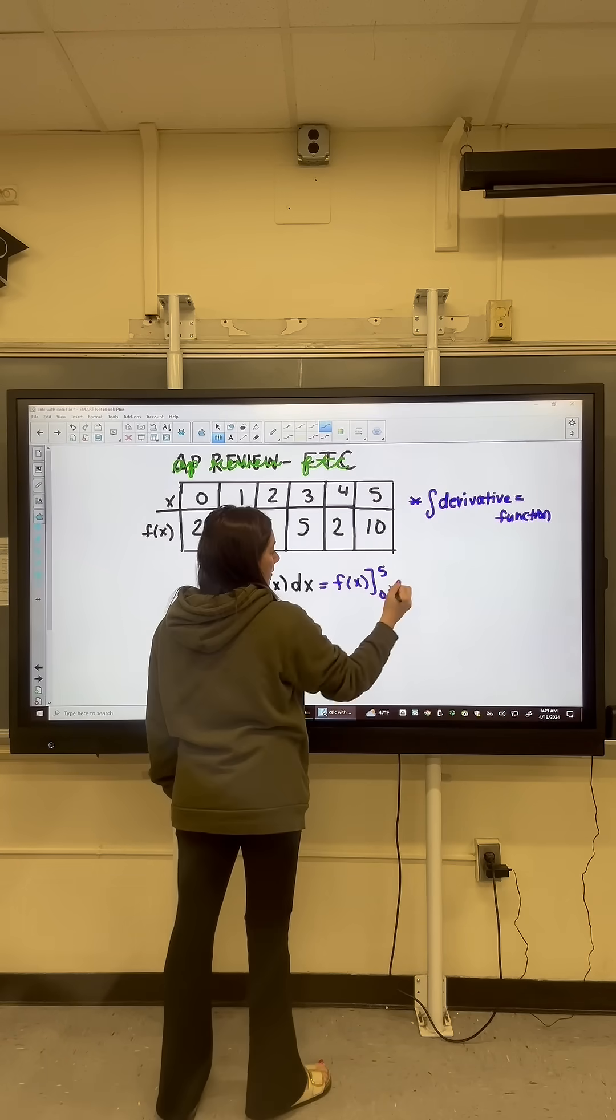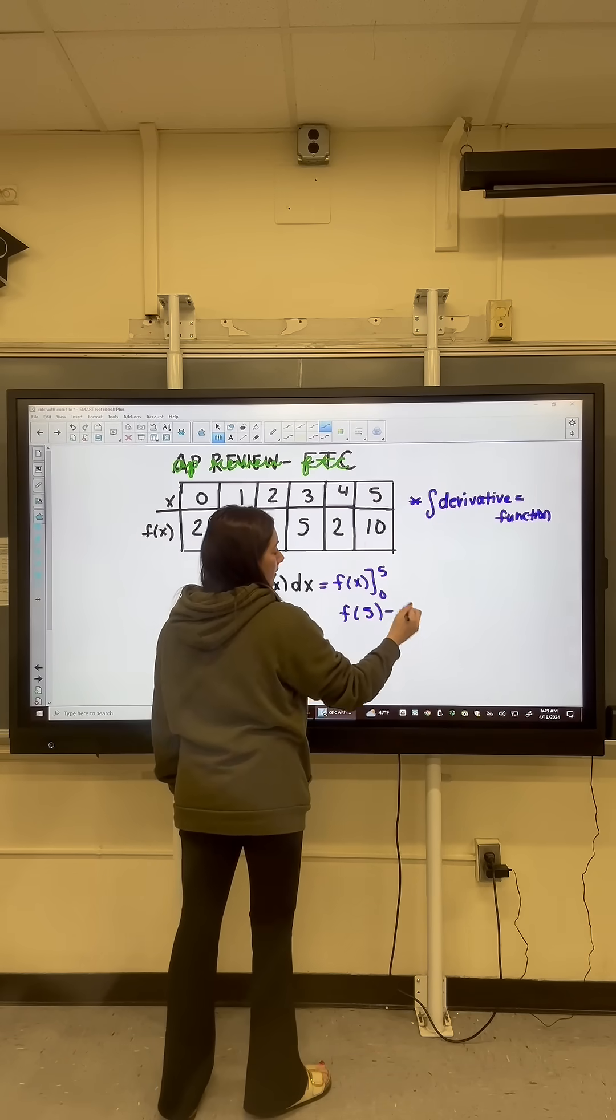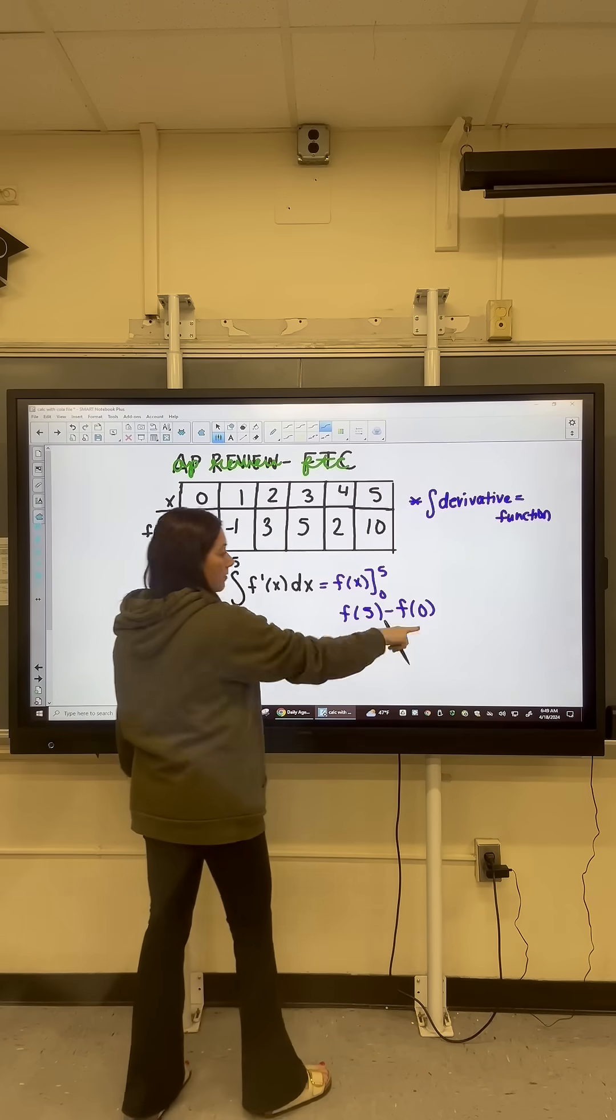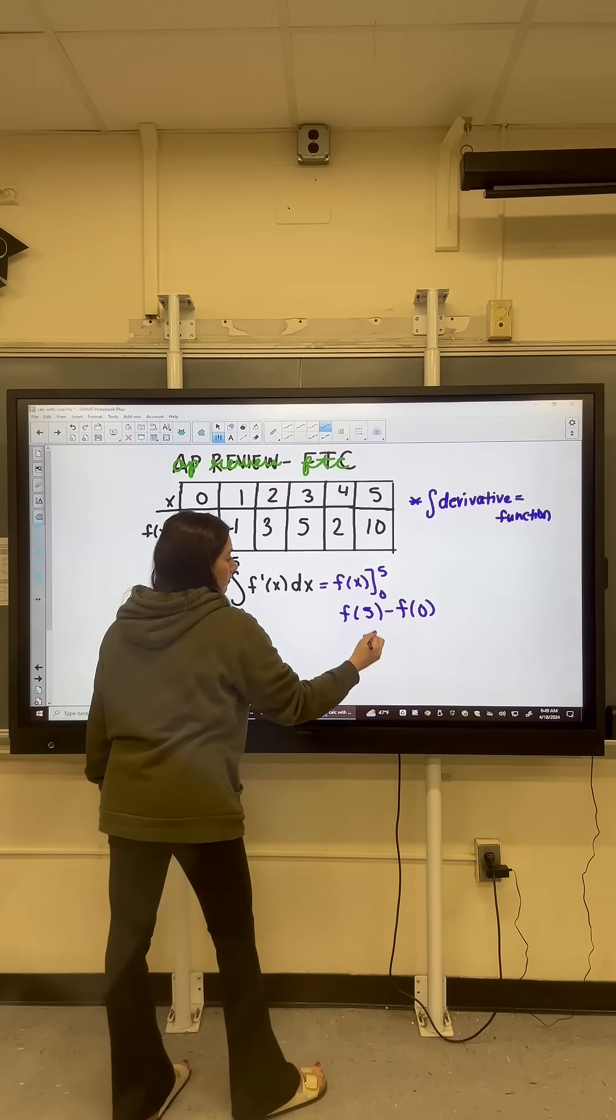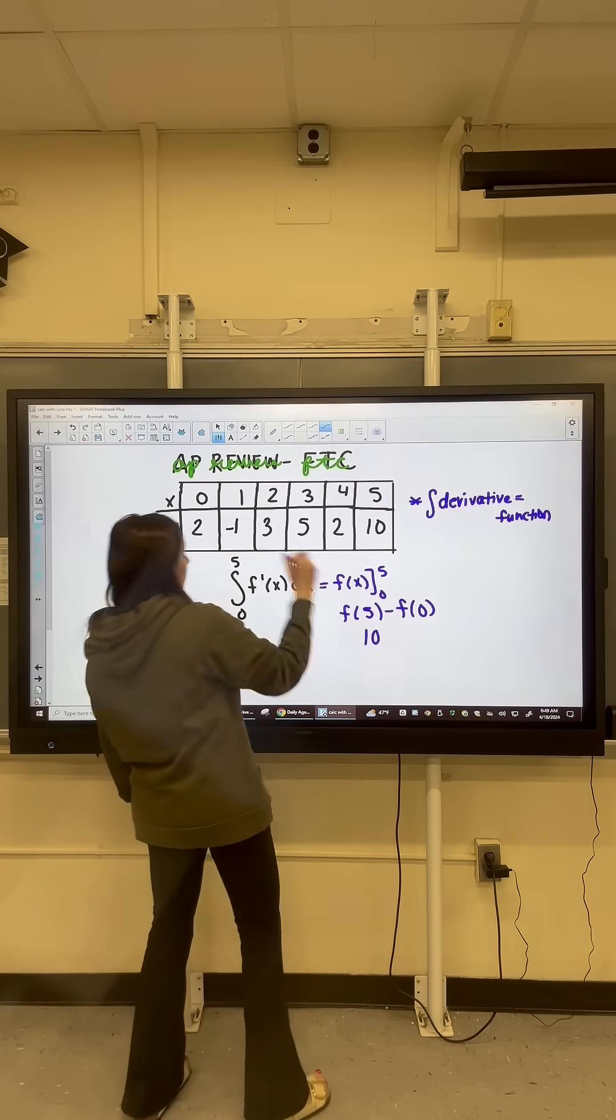Remember, we always plug in the upper bound first, so it's going to become f of 5 minus f of 0. And all we're going to do is pull that from the table. So we're going to get 10 minus 2, which is 8.